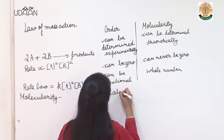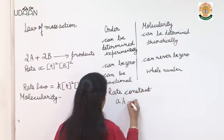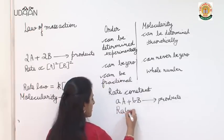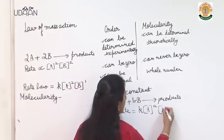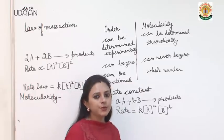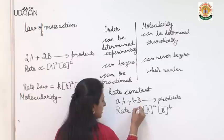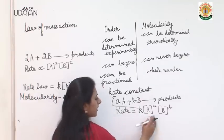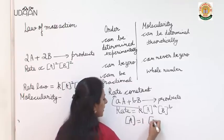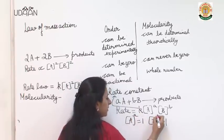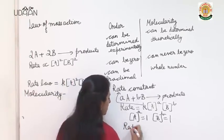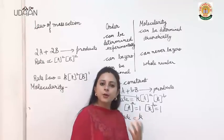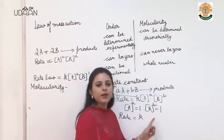Now let me explain what is rate constant. Consider any reaction AA + BB going to products. The rate is K[A]^a[B]^b, and let us say this is the experimentally determined rate law. The term K is the rate constant. If the molar concentration of the reactants is unity — that is, [A] = 1 and [B] = 1 — then rate will be equal to K.